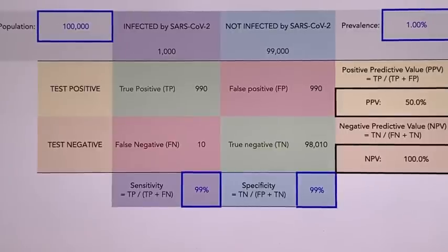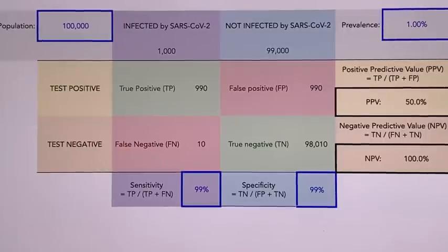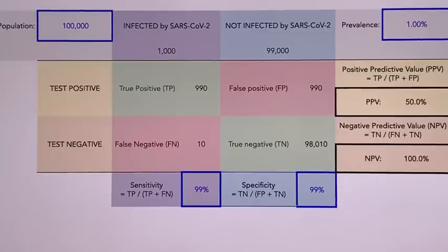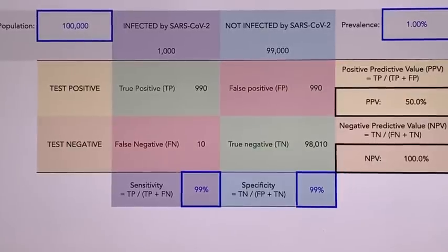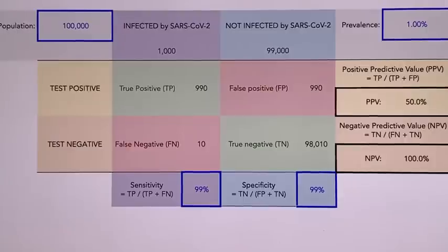Now let's look at an example. Imagine a coronavirus scenario where only 1% of the population is truly infected — in New York, that would be about 80,000 people, while the majority are not. How valuable would a test be with 99% sensitivity and 99% specificity? On the surface you'd think that's an awesome test. Well, it turns out your positive predictive value would still be poor — only 50% — meaning if you test positive, there's only a 50% chance you actually have coronavirus.